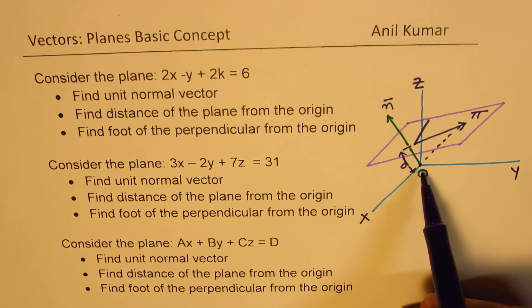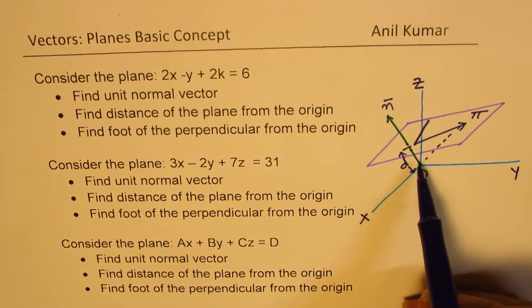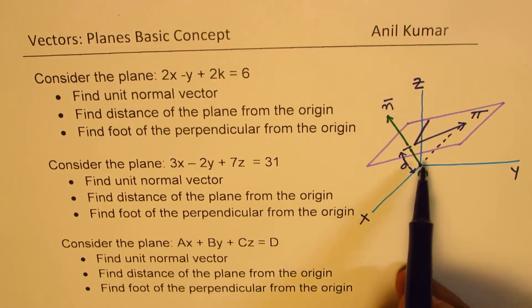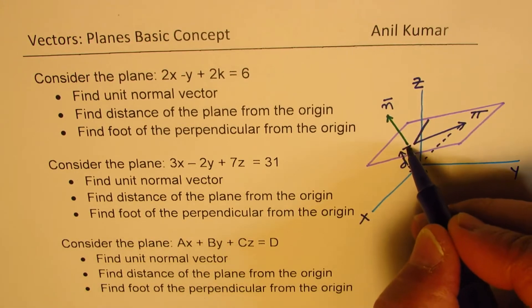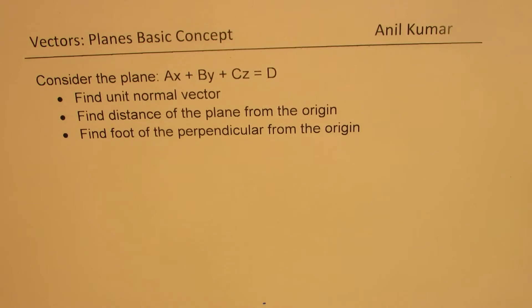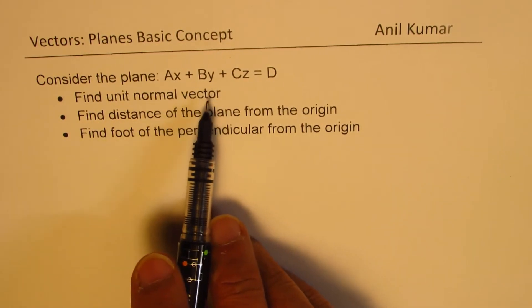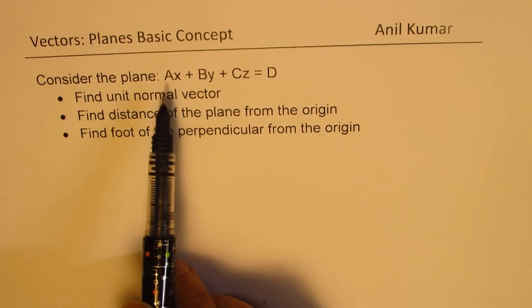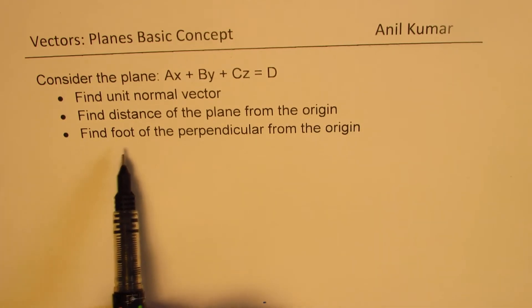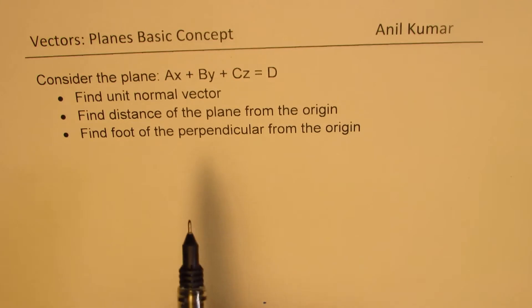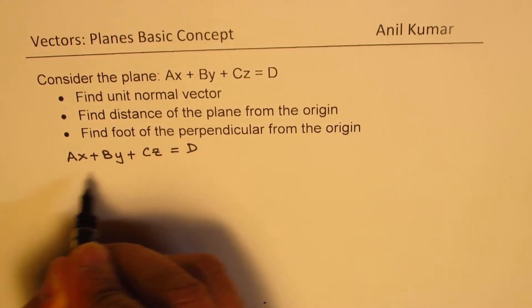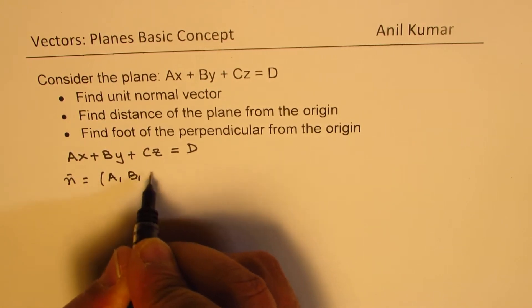We'll talk about the normal, the distance from the origin, and then see how to answer these questions: find the unit normal vector, the distance of the plane from the origin, and the foot of the perpendicular from the origin. Let's begin with the standard Cartesian equation of the plane. If the equation of the plane is AX plus BY plus CZ equals D, then we know that the normal vector is (A, B, C).